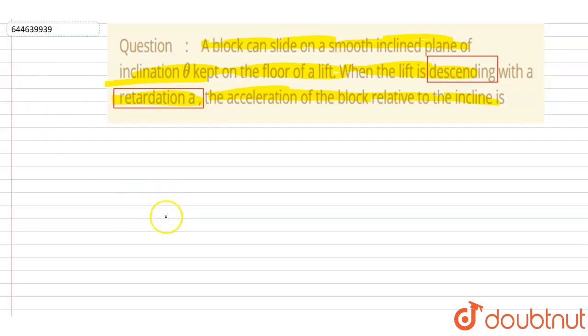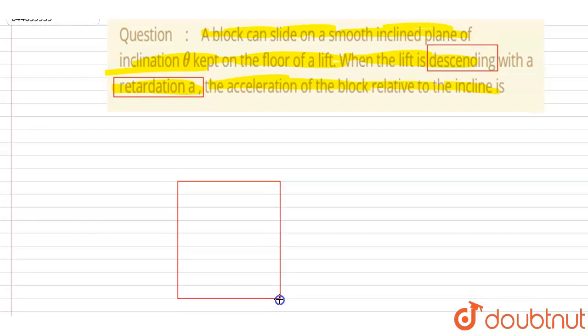So it is descending, the velocity is in downward direction, right? And the acceleration is in upward direction. This is what it means. Though it is moving in downward direction with some velocity, the motion is retarding and acceleration is in upward direction, alright?